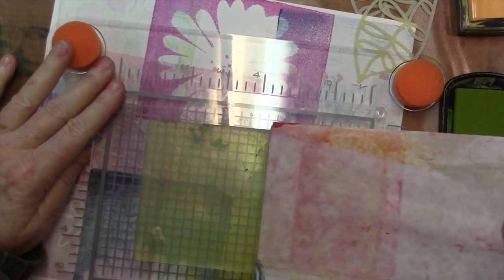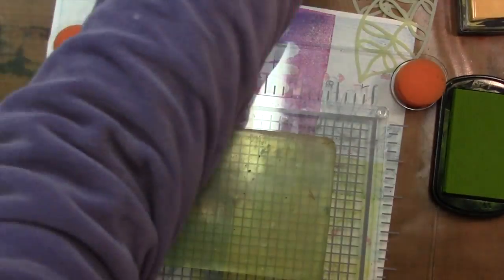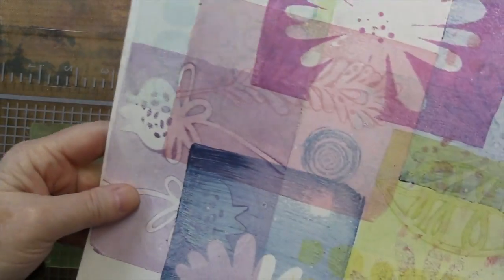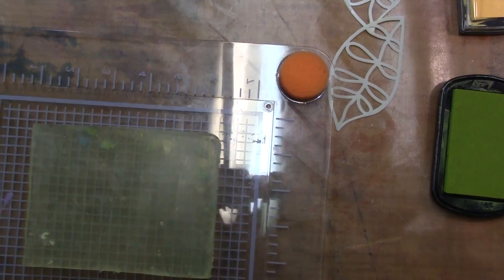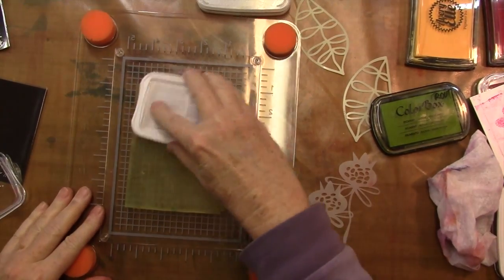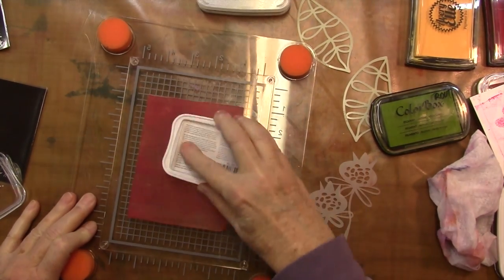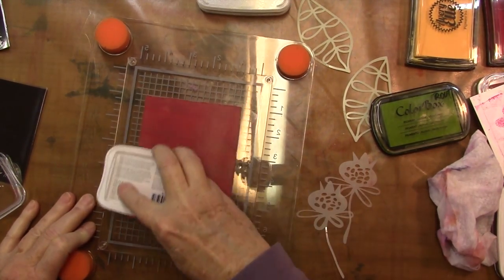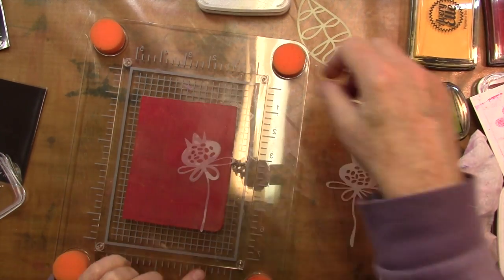So the nice thing about this stamp press is that it is larger and it allows you to, because of those foam feet, it allows you to wiggle the press down a little bit before you stamp. And then it's a nice large surface and just rub along the back so that you get a good consistent print.